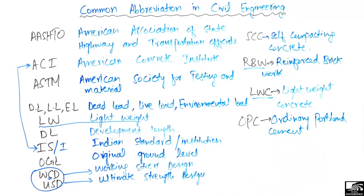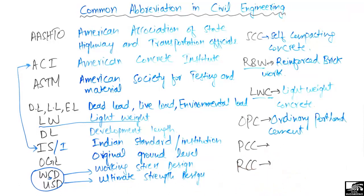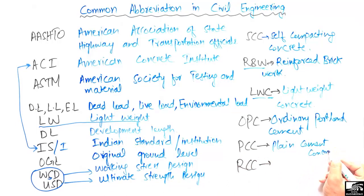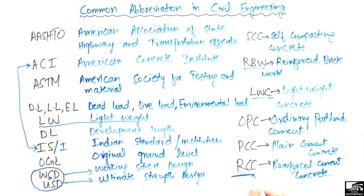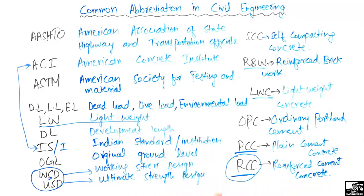We also have PCC, which represents Plain Cement Concrete, and RCC, which represents Reinforced Cement Concrete. RCC refers to concrete that has been reinforced with steel bars or other types of bars such as polymer bars. When concrete is reinforced with another type of bar, it is called reinforced cement concrete, while simple unreinforced concrete is called plain cement concrete.